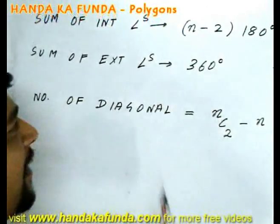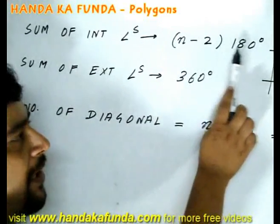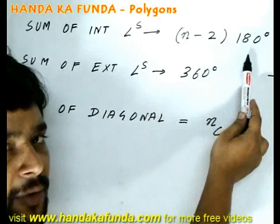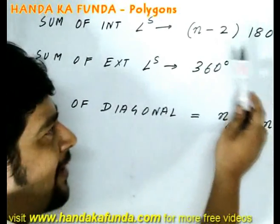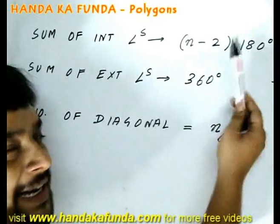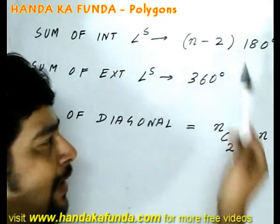The sum of the interior angles in case of a polygon is n-2 into 180 degrees. Think about it. In a triangle, n is 3, sum of the angles is 180. In a quadrilateral, n is 4, number of sides is 4. So 4-2, 2 into 180 or 360 degrees. This always holds true.